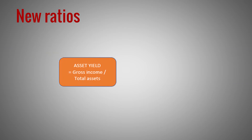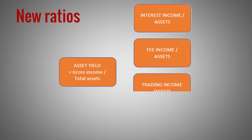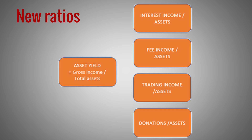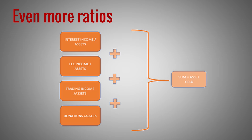We can break down the asset yield into the various sources of income: (1) interest income over assets, (2) fee income over assets, (3) trading income over assets, and (4) donations and subsidies over assets. The sum of these four ratios equals the asset yield. These four ratios represent the main sources of the bank's revenues. Donations are common in microfinance institutions. The model is flexible as to which revenue sources to include and to exclude. This income-over-assets breakdown shows how the financial institution generates its revenues.